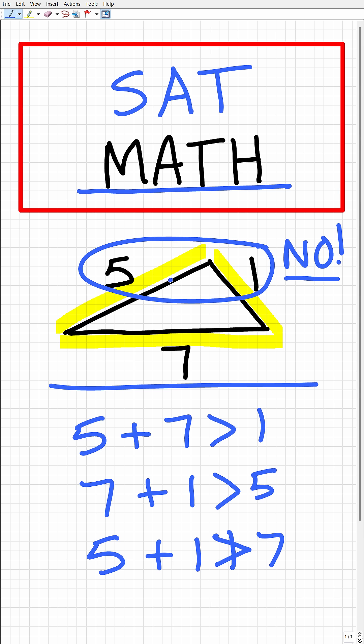In other words, it cannot construct a triangle with the lengths 5, 1, and 7. So for more SAT math help, check out the link in the description and the comment section.